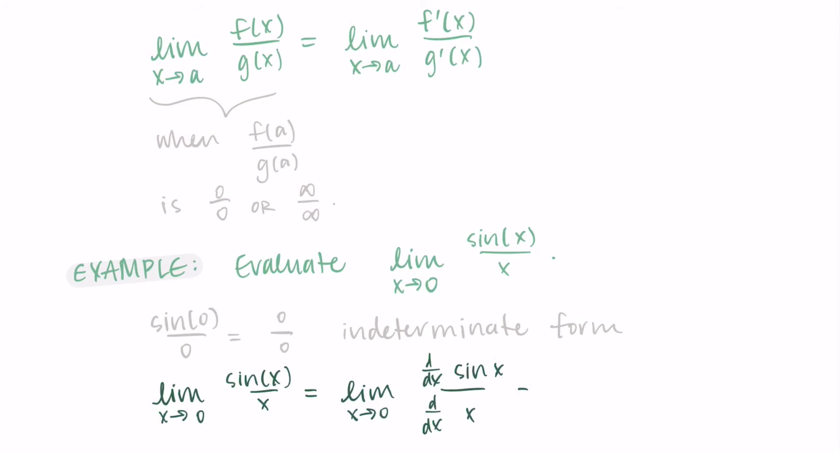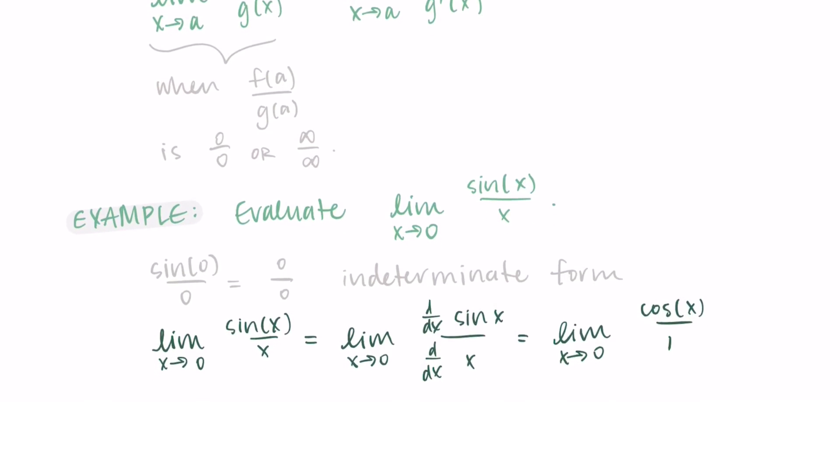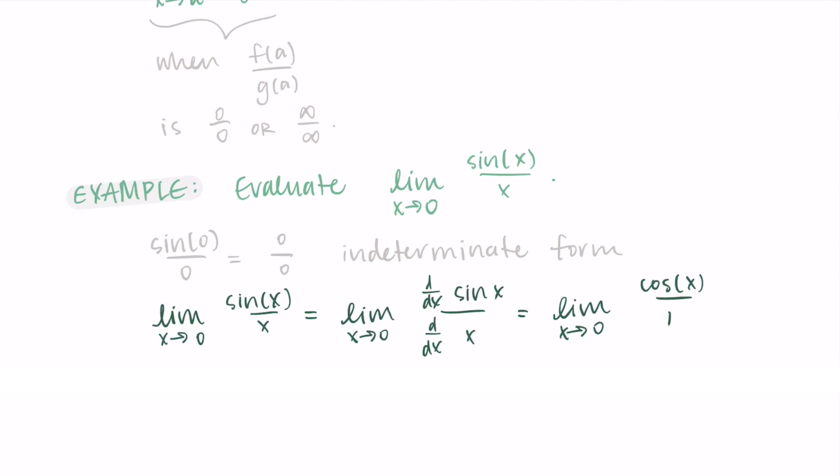I still have the limit as x approaches 0, but I'm taking the derivative of sine over the derivative of x. The derivative of sine is cosine, and the derivative of x is 1. Now I can just repeat my process of substituting. I have a new limit to consider. It's the limit as x approaches 0 of cosine over 1. I substitute in 0, I have cos(0) over 1. Cosine of 0 is 1. So I have 1 over 1, which is 1.